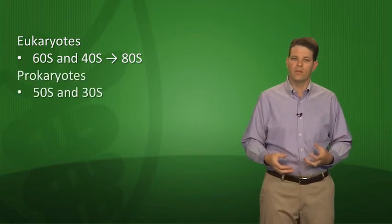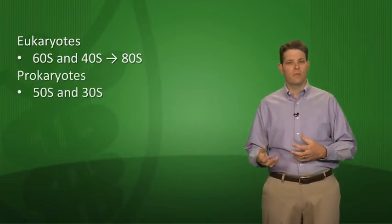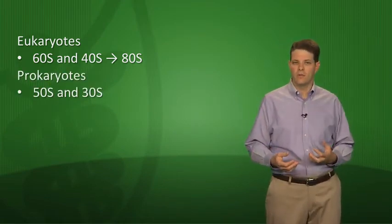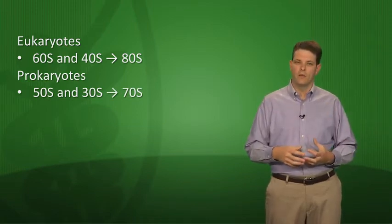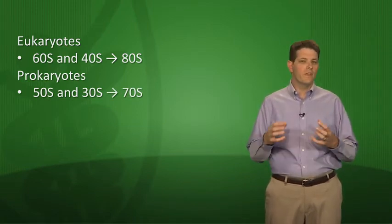Each ribosome is made up of two subunits. In eukaryotes there's a large 60S ribosomal subunit and a small 40S ribosomal subunit, which come together to form an 80S ribosome. Prokaryotes like bacteria have a 50S ribosomal subunit and a 30S subunit that come together to form a 70S ribosome.